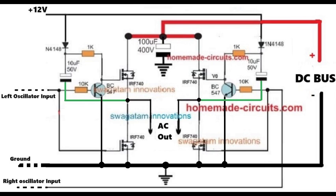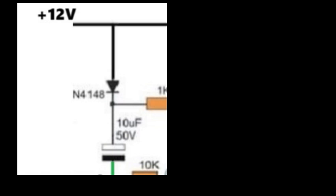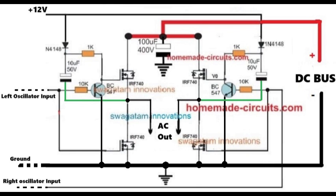Now let's try to understand how our universal H-bridge circuit module using N-channel MOSFETs works. Let's assume an instantaneous moment where the left side oscillator input is low and the right side oscillator input is high. In this situation, the left side BC547 is turned off due to the absence of base switching voltage, and the left side 10µF 50V capacitor is charged up to the battery voltage level through the 1N4148 diode. The left high-side MOSFET then gets its voltage through the 1N4148 diode and the 1K resistor and makes an attempt to conduct.